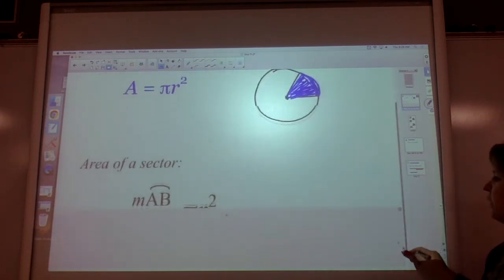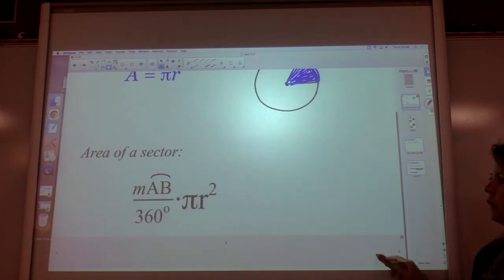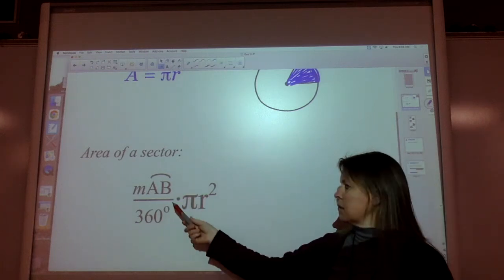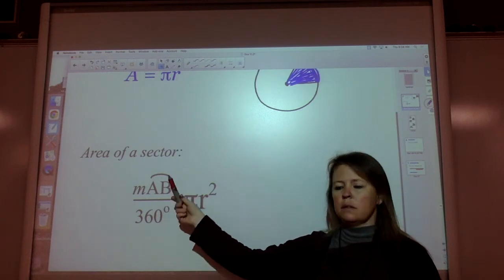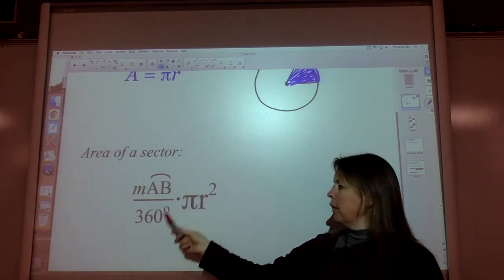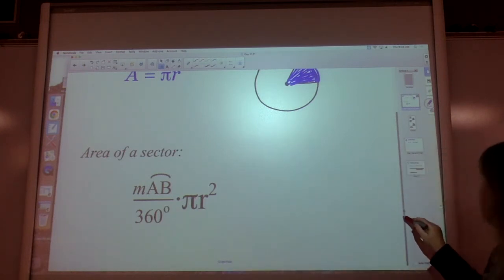How do you find the area of a sector? It should look very familiar. You take a fraction of the area. We already worked on a fraction of the circumference. Now we're doing that same fraction. What is the measure in degrees of arc AB compared to 360? Multiply it times πr².